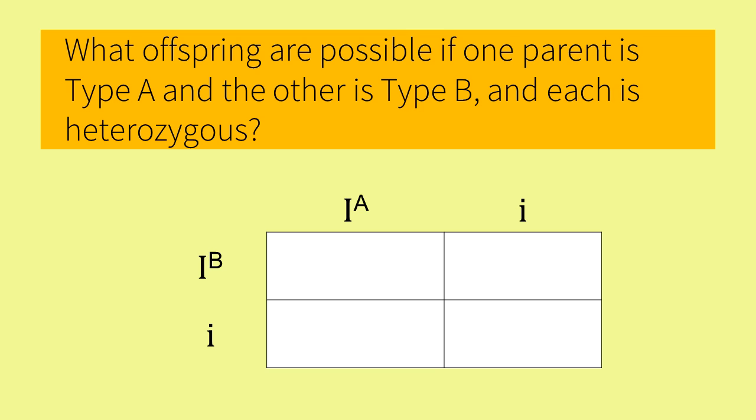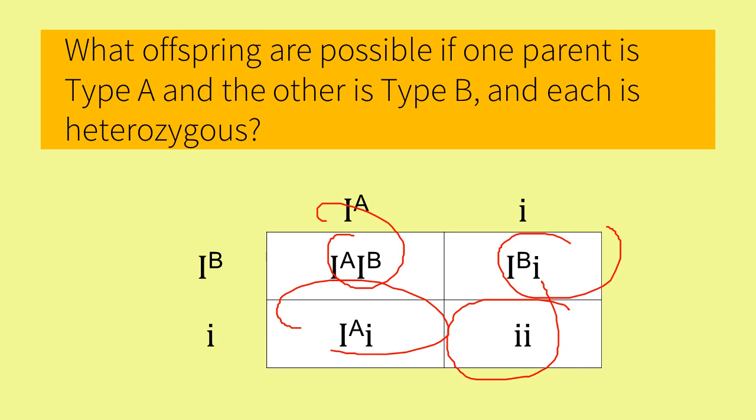So what offspring are possible if one parent is type A and the other is type B and each is heterozygous? Mendel's law of segregation states that each parent will pass on only one allele for blood type. Their children can have any possible blood type: A, B, AB, or O.